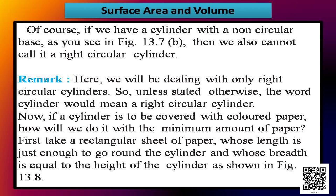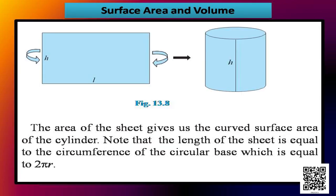A cylinder should be at right angles to the base and the base must be circular. Now, if a cylinder is to be covered with colored paper, first take a rectangular sheet of paper whose length is just enough to go round the cylinder and whose breadth is equal to the height of the cylinder, as shown in figure 13.8. The area of the sheet gives us the curved surface area of the cylinder.